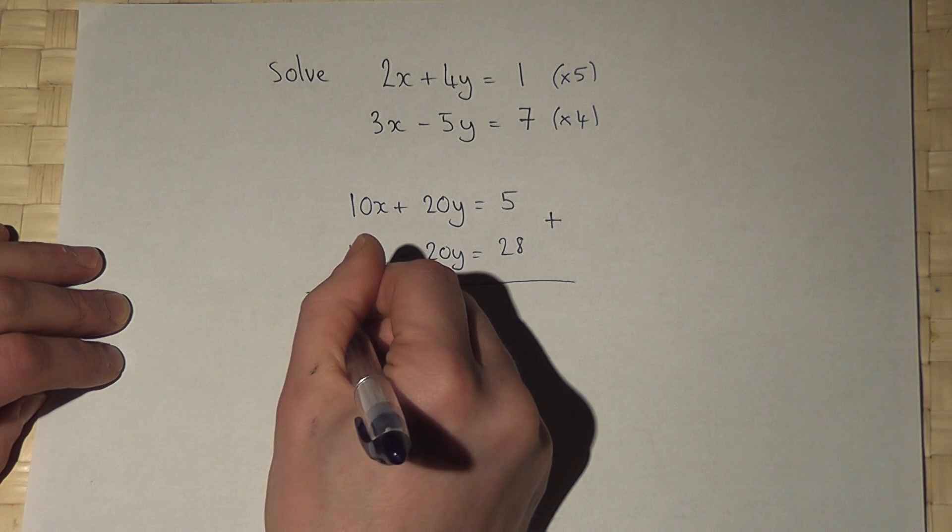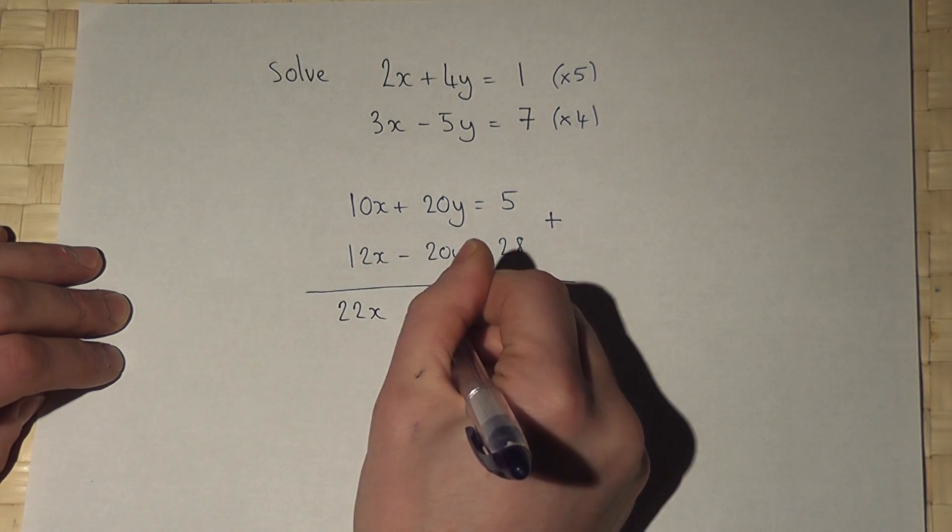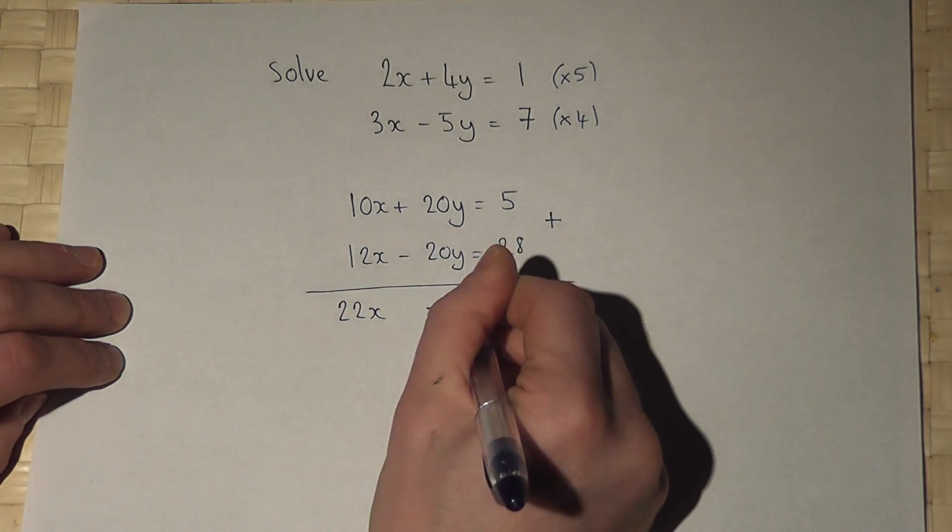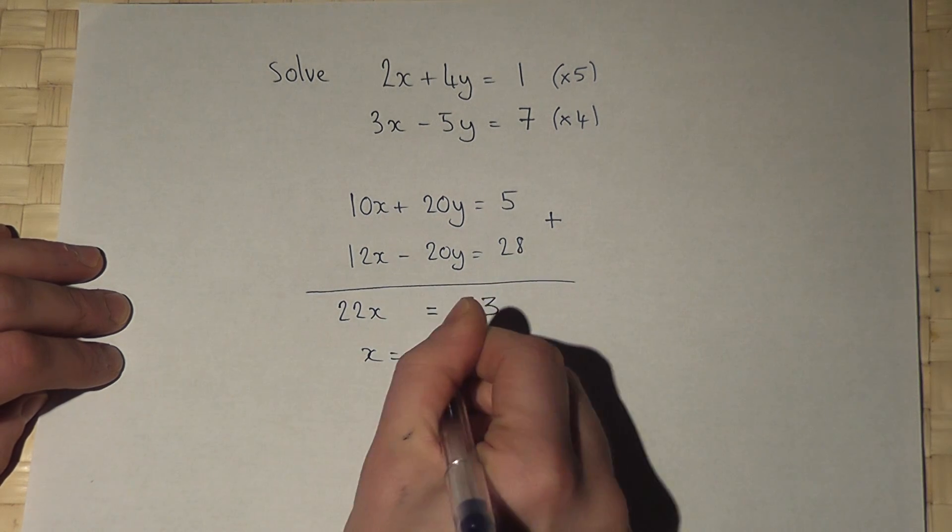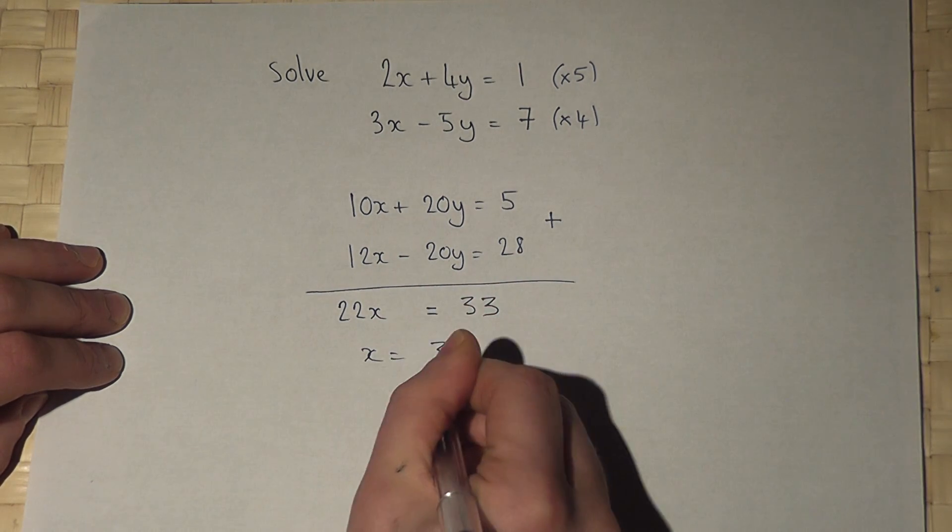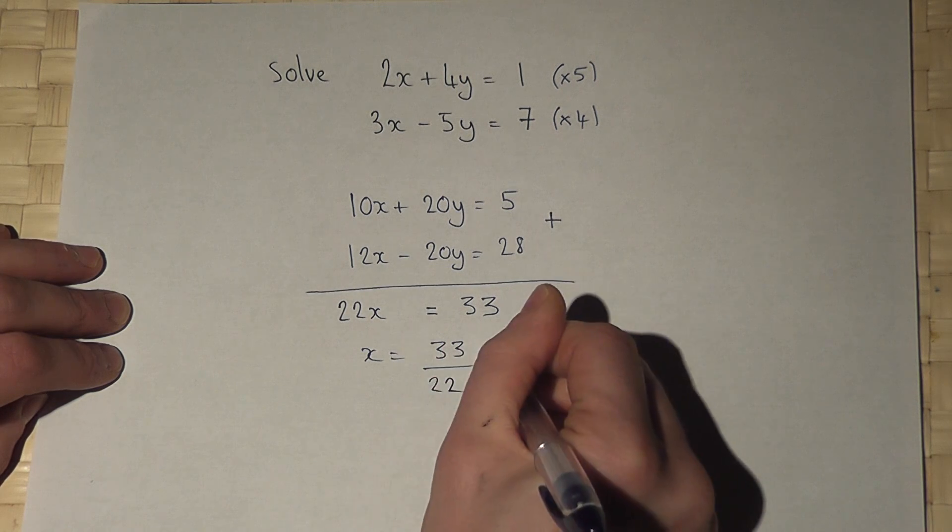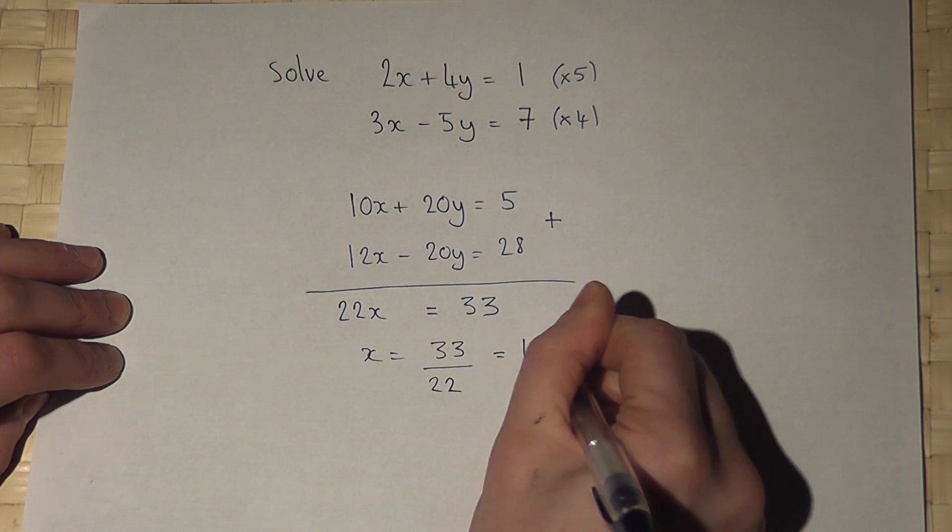So we're left with 22x is equal to 33. So x equals 33 over 22, which is just 1.5.